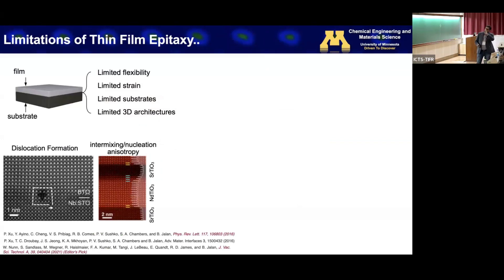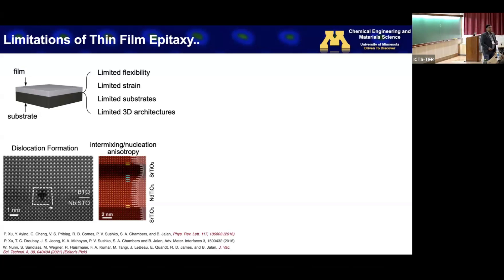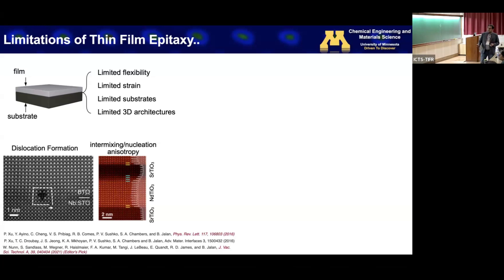When you think about epitaxy of these materials, there are some limitations. Think about putting a material on top of a substrate — you can think about all the limitations with regard to flexibility, strain, substrate constraints, and making 3D architectures of the functional film. Likewise, you can think about dislocations as a potential issue in epitaxy. If your film is mismatched with the substrate, you can create periodic or random misfit and threading dislocations in your functional film, which may be undesirable. Also, epitaxy of material 1 on material 2 versus material 2 on material 1 can yield different interfaces, because nucleation and growth can differ depending on the starting layer.